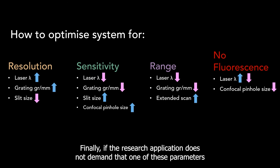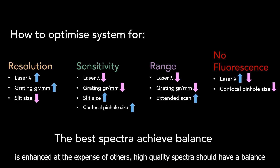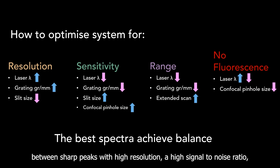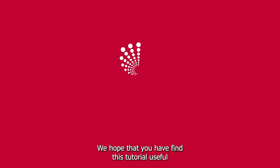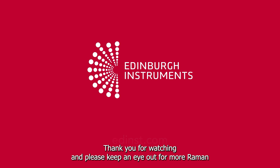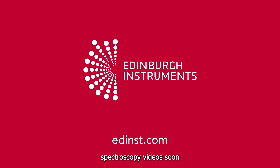Finally, if the research application does not demand that one of these parameters is enhanced at the expense of others, high quality spectra should have a balance between sharp peaks with high resolution, a high signal-to-noise ratio, a large spectral range, and minimal sample backgrounds. We hope that you have found this tutorial useful. Thank you for watching and please keep an eye out for more Raman Spectroscopy videos soon.